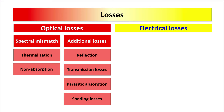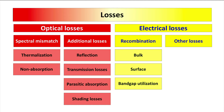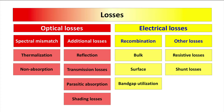Electrical losses arise mainly from the recombination of charge carriers in solar cells and other electrical losses. The recombination losses are due to the loss of charge carriers by bulk and surface recombination, and by fundamental recombination related to the utilization of the bandgap energy. Other electrical losses represent voltage drops at series and shunt resistances. In this video, we will first review and quantify the spectral mismatch losses in a solar cell.